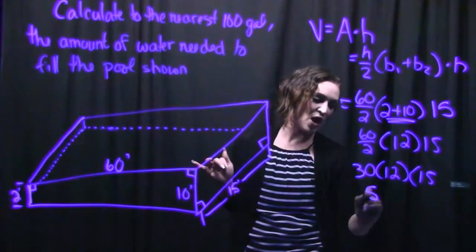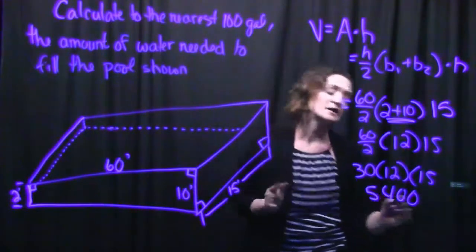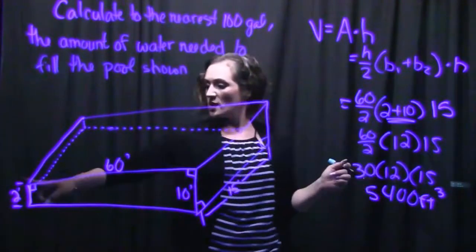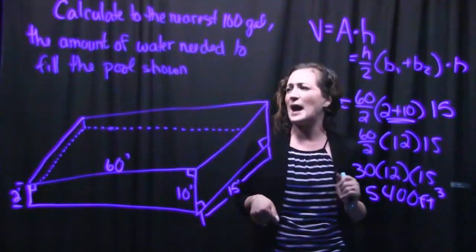And when we multiply all of that together, we get 5,400 cubic feet. So all of this was in feet here. And remember that volume is always to the third power.